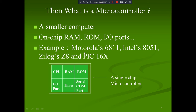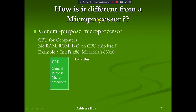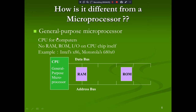For example, the Motorola 6811, Intel 8051, PIC 16x, and Atmel 8051 are microcontrollers. They are single-chip microcontrollers having a CPU, RAM, ROM, I/O ports, timers, and serial COM ports — all embedded on a single chip. In microprocessors, however, you need to connect the I/O ports externally.